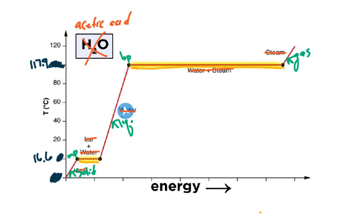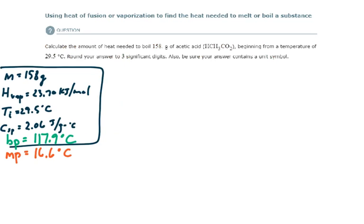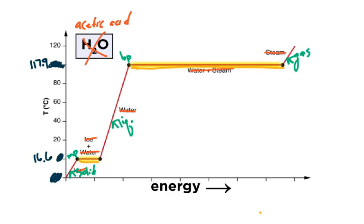Where's 29.5 degrees Celsius? It's somewhere in this region. So that tells me we are starting with liquid acetic acid. It's above the melting point but below the boiling point, somewhere in here. This is our starting point. They want us to boil it, to boil all of this acetic acid. So that tells me this is going to be a two-step problem.